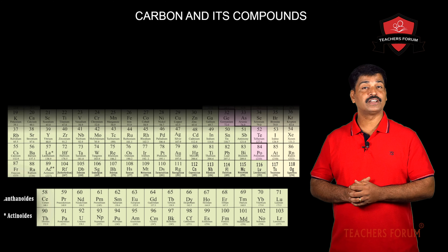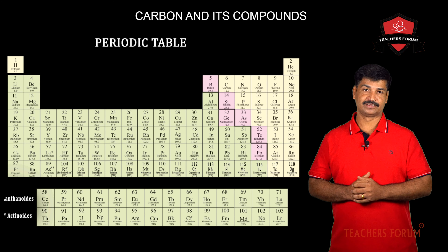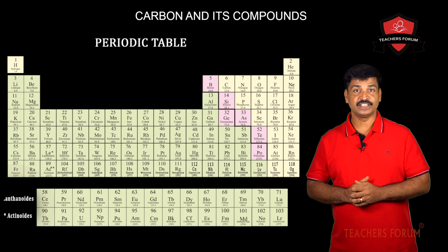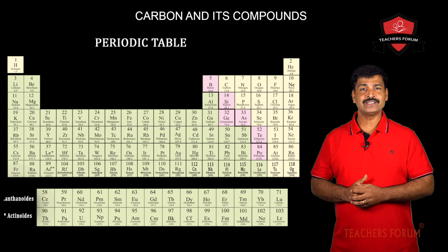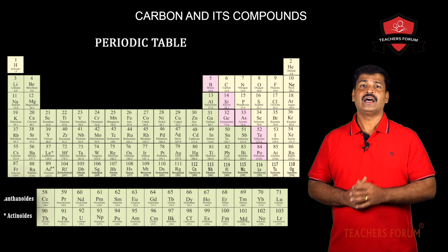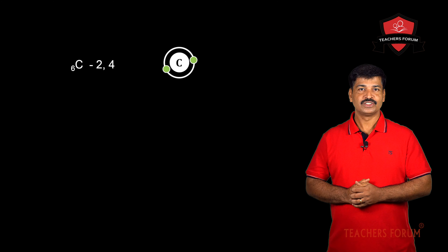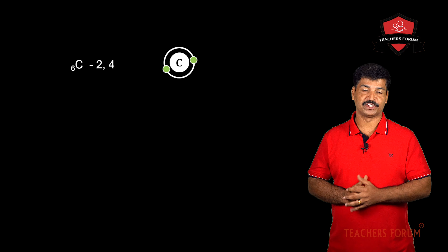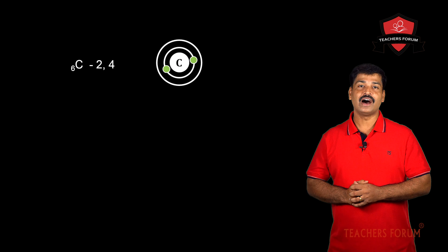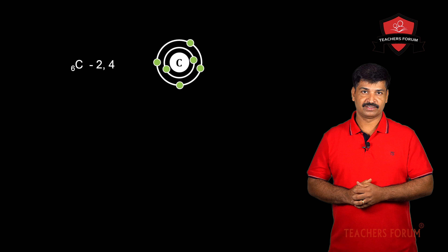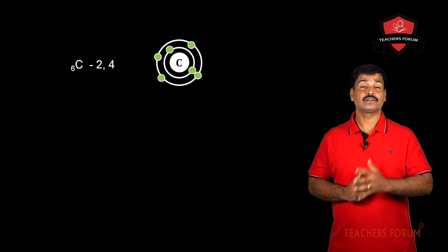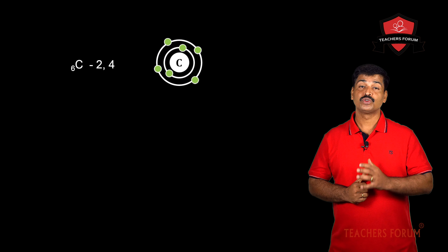In the periodic table, carbon is placed on the right side, which means carbon is a non-metal. The atomic number of carbon is 6. What will be its electronic configuration? It will be 2,4. The first shell can accommodate a maximum of 2 electrons, so 2 electrons are placed in the K-shell, and the remaining 4 electrons are in the second shell, the valence shell. That's why the electronic configuration of carbon is 2,4.